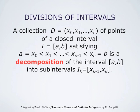Consider a closed interval I from A to B, and an ordered collection of points D: X0, X1, so forth, Xn. We assume that this ordered collection forms an increasing list of numbers. If X0 equals A, and Xn equals B, and in between Xk minus 1 is always less than Xk, then we say that this ordered collection D is a decomposition of the interval from A to B into subintervals Ik, whose endpoints are Xk minus 1 and Xk.